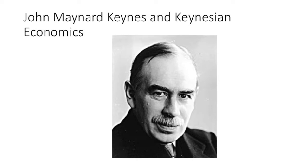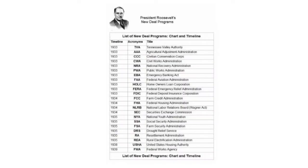The New Deal reformed the banking system and created jobs through programs like the CCC and WPA. This created what's known as the welfare state. His first hundred days: he closed banks for four days and reopened only the good ones. The Wagner Act legitimized labor unions, with government siding with workers over businesses. We also got the Social Security Act, minimum wage, overtime, and the elimination of child labor.